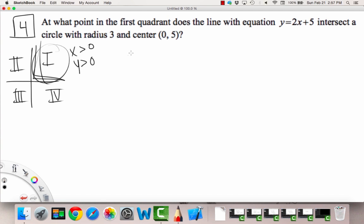At what point in the first quadrant does the line with the equation y equals 2x plus 5 intersect a circle with radius 3 and center (0, 5)? Okay. So we're given the equation of a line, y is equal to 2x plus 5. And we're also given some information about a circle. So we're given r is equal to 3 and our center is 0, 5.